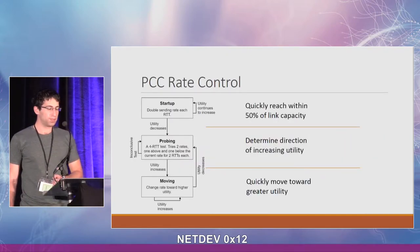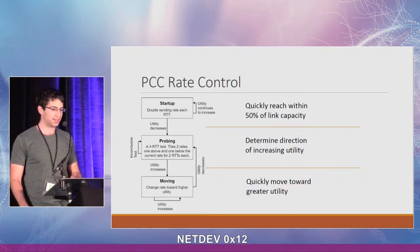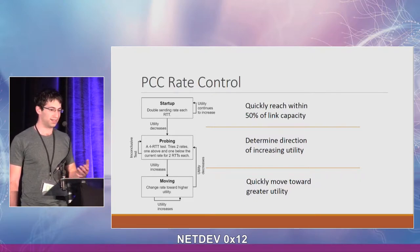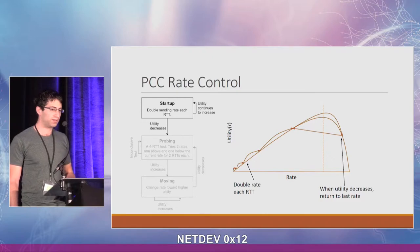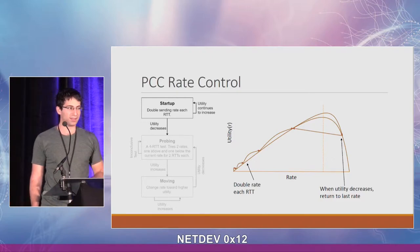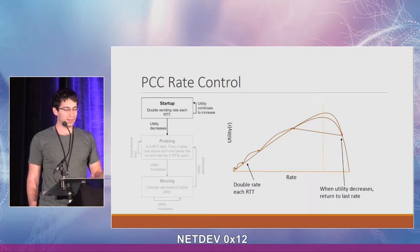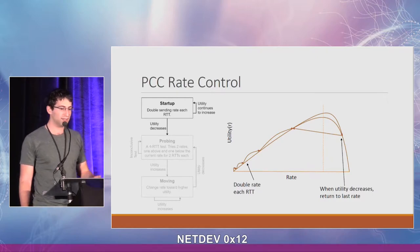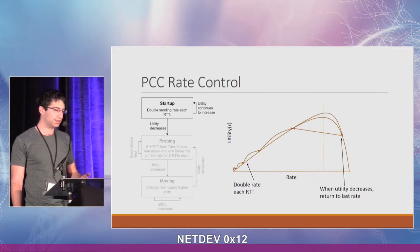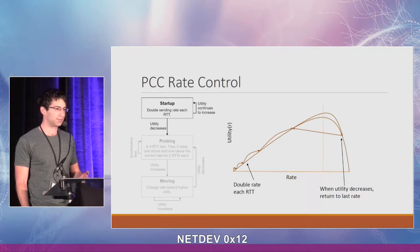PCC has three states in its rate control state machine: startup, probing, and moving. Startup is similar to TCP slow start — the goal is to quickly reach within 50% of the link capacity. Like TCP slow start, it doubles the sending rate on each RTT, but it backs off when the utility starts to decrease.